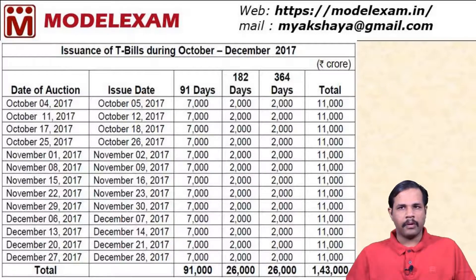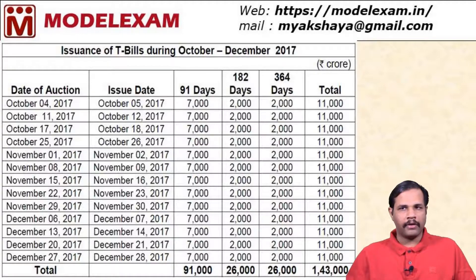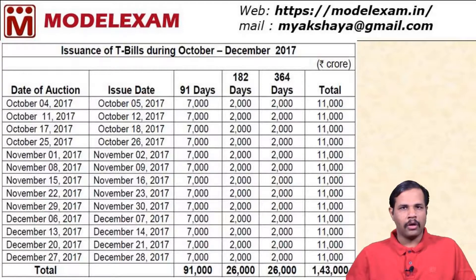This data is taken from the RBI website. This is the calendar issued by RBI for the issuance of treasury bills. We have three types: 91 days, 182 days, and 364 days. For each category the notified amount is given — 91 days is 7,000 crore, 182 days is 2,000 crore, and 364 days is 2,000 crore. So totally 11,000 crore worth of treasury bills are issued.